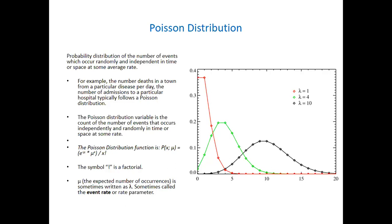The Poisson distribution variable is the count of the number of events that occur independently and randomly in time or space. It can be time or space - a particular geographical area, or over a period of time.